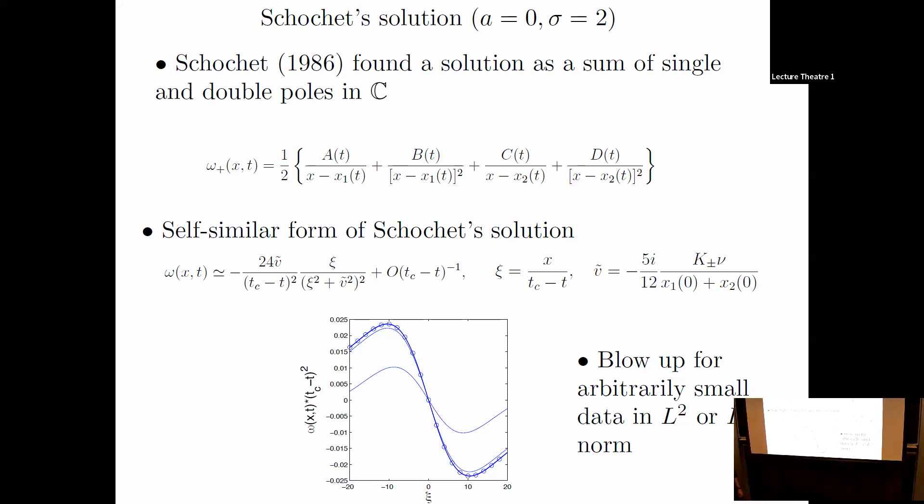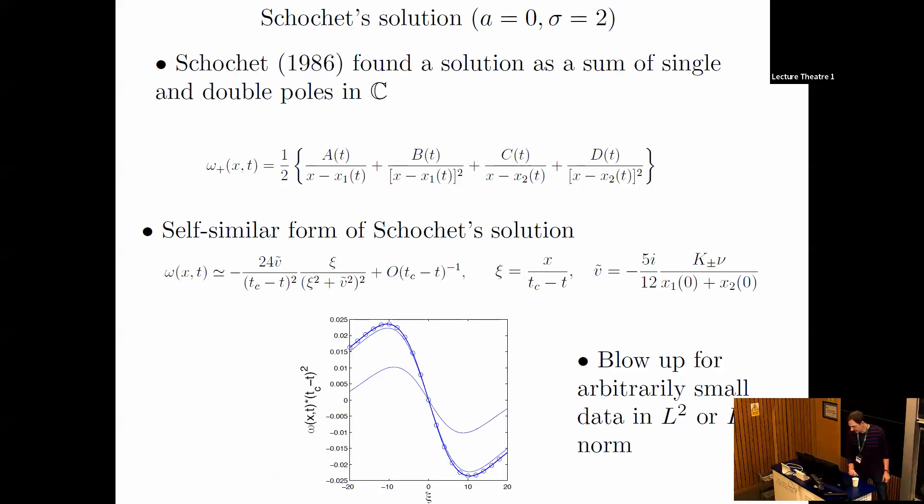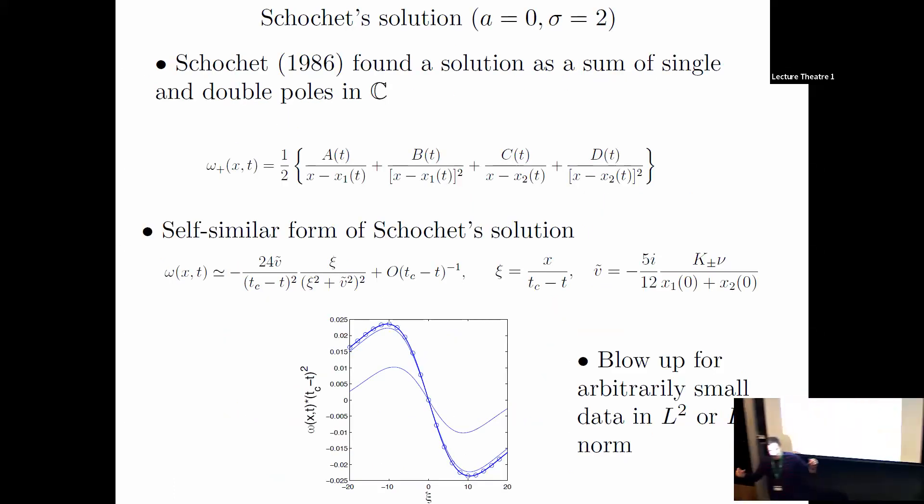Funny enough, when we first started computing this using his initial data, we didn't get his solution. Instead of poles, we got branch points. We didn't get exactly his blowup time—it was really close, but not exactly. That confused us for a long time. We did the calculation independently and realized one number was wrong in this term. A typo in his paper. When you fix that, you get exactly this. His solution always blows up, even with strong dissipation. It always blows up for arbitrarily small data. Now you see the trend. For the problem on the real line, you get blowup for small data.